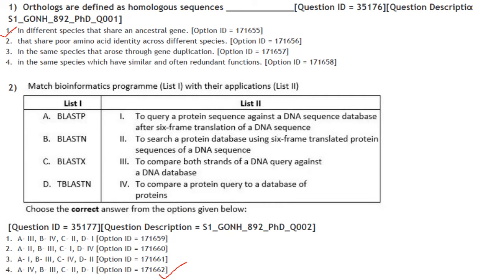The first question: orthologues are defined as homologous sequences. Orthologous genes in different species derive from a common ancestor — that is why they are called orthologous genes. In different species they share an ancestral gene. Answer is option 1.